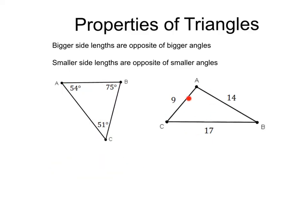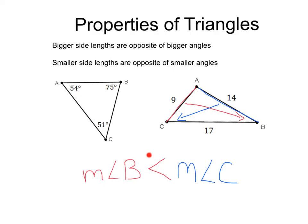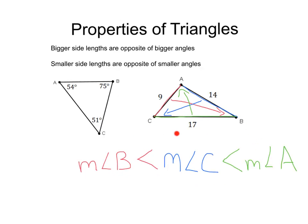We can do the same thing in the other direction. Say we wanted to find our smallest angles to our largest angles. Take our smallest side — that would be 9 — and find the opposite angle, which would be angle B. The next smallest side is 14, and the opposite angle of 14 is angle C. That means the measure of angle B is going to be less than the measure of angle C, which is going to be less than our largest angle, opposite of our largest side, 17 — and that's going to be angle A. So we have our angles in order of size: B is less than C is less than A.